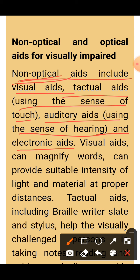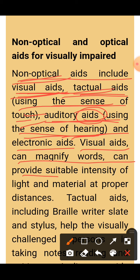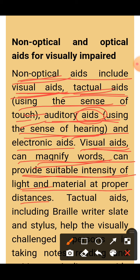Among non-optical aids, visual aids and auditory aids come. Auditory aids use the hearing sense to help. Visual aids can magnify words, provide suitable intensity of light, and provide material at a proper distance. For persons who are not completely blind but have weak vision, visual aids help by magnifying words and providing proper light intensity and material at proper distance so that the person can see.